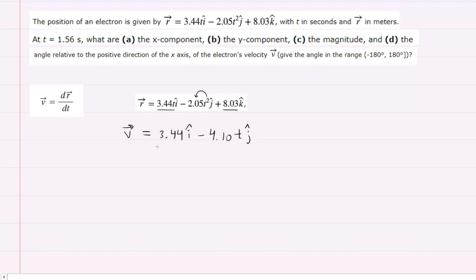So this would give us our velocity function, and we want the velocity at a specific time at 1.56 seconds. So we're going to be plugging in the time of 1.56 seconds.